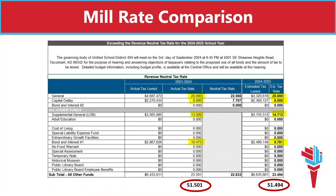The form shown here was published in the Capital Journal on August 22 as part of the budget adoption process. You can see the general fund listed first. In the third column are the actual mills or tax rate that were assessed last year. You can see that it shows 20 mills here. This is a statewide uniform property tax that has been set at 20 mills since the 1998-99 school year. All 286 districts in Kansas assessed 20 mills. The far right column shows the rate that we adopted for this year, which also shows the required 20 mills.